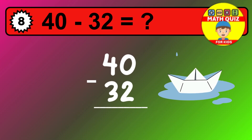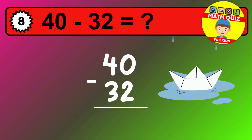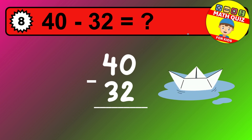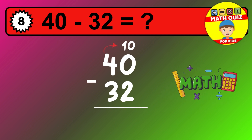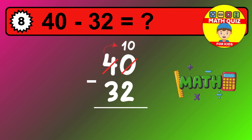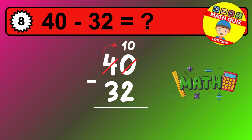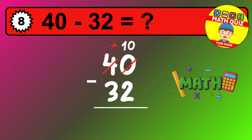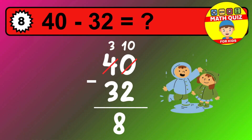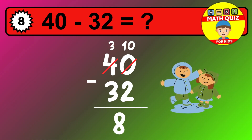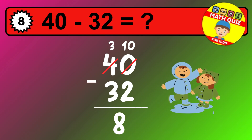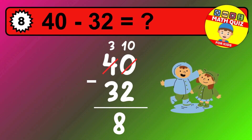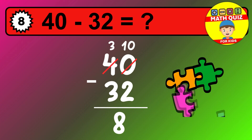Let's solve this step by step. We start with the units. Zero minus 2 is not possible, so we need to regroup. We take one 10 from the tens column. Now we have three tens, and the units become 10. Now we subtract. 10 minus 2 is 8. Then we go to the tens. 3 minus 3 is 0. The final answer is 8.